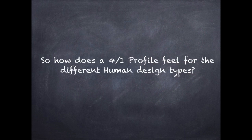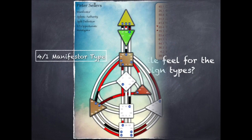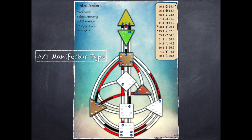Since all types can carry the 4-1 profile, how does it feel for each human design type? When a manifester carries a 4-1 profile, this is somebody who can make their own opportunities and will make them within their network of friends. Having this profile is probably one of the only things that can actually slow a manifester down, because after they create the opportunity they need to investigate it to see if it's right for them. The most important thing for a manifester with a 4-1 profile is to inform their network exactly what's happening and what they'll be doing, so that everybody is on the same page.